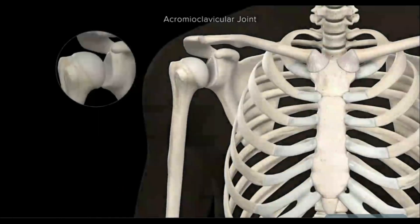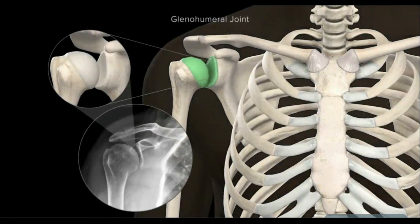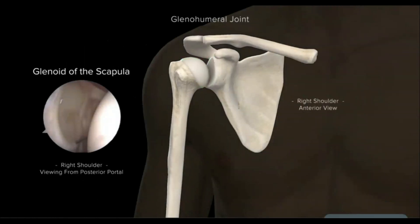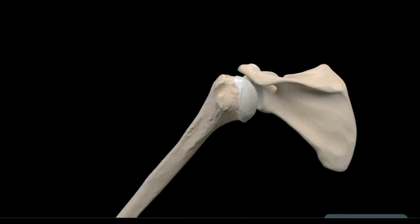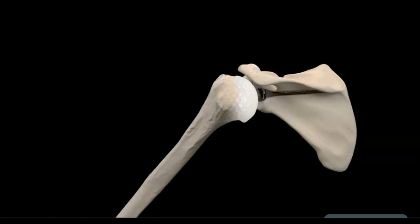The final and most intricate articulation of the shoulder joint complex is the glenohumeral joint, created by the articulation of the glenoid fossa of the scapula and the head of the humerus. This joint is described as a ball and socket joint, often likened to a golf ball sitting on a golf tee, due to the large humeral head in comparison to the small, shallow, and concave surface of the glenoid.